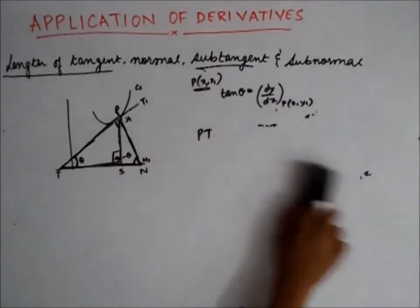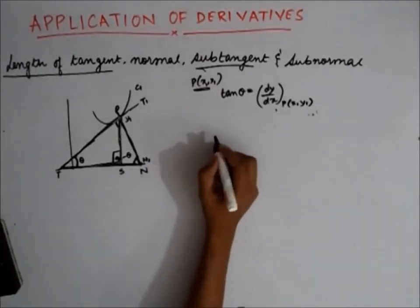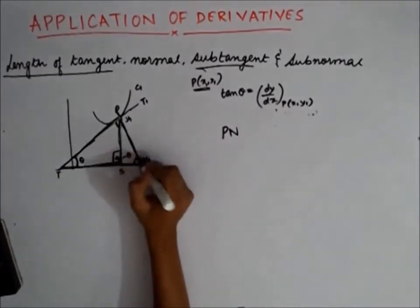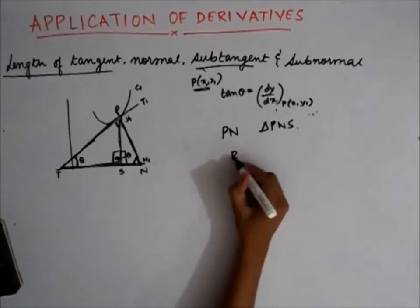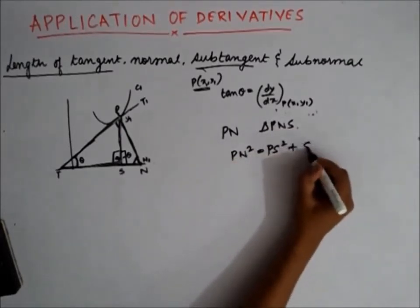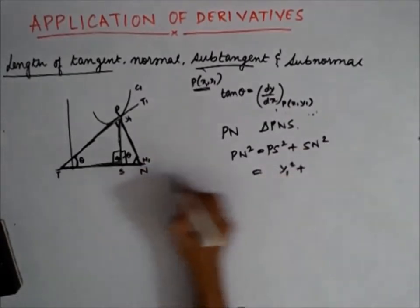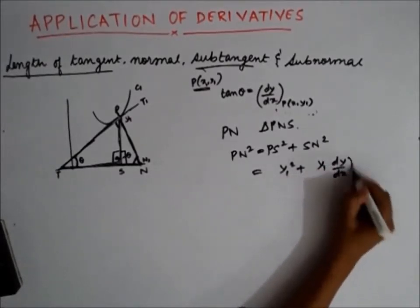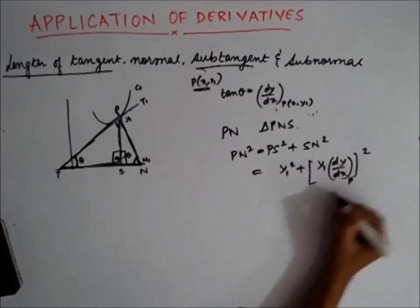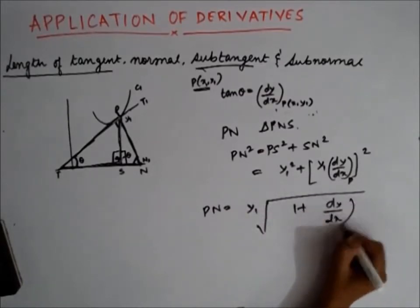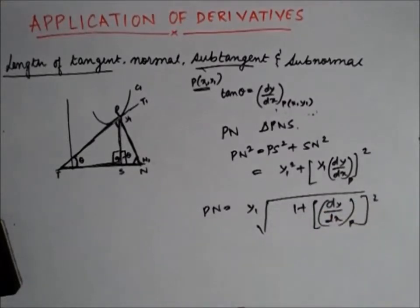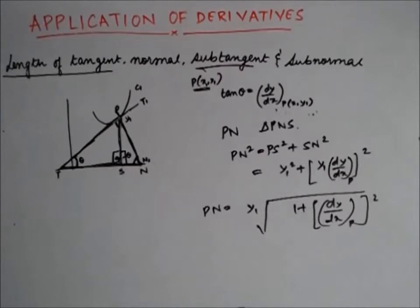The last part is to find the length of the normal, PN. Take the right-angled triangle PNS. By the Pythagorean theorem, using PS = y1 and SN = y1 · (dy/dx), the length of the normal PN = |y1| · √(1 + (dy/dx)²). We have now found the formulae for the length of tangent, normal, subtangent, and subnormal.